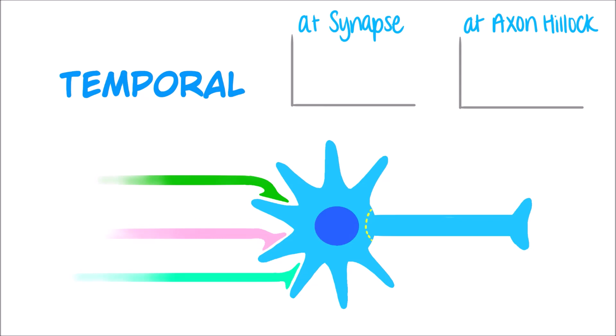Here there are three action potentials traveling down this presynaptic neuron in the middle. Because they were right after one another, the EPSPs add up. The compound EPSP reaches threshold potential at the axon hillock, which successfully initiates an action potential.